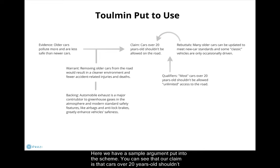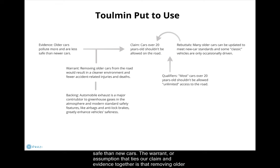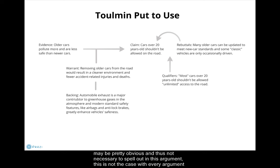Here we have a sample argument put into the scheme. You can see that our claim is that cars over 20 years old shouldn't be allowed on the road, and our evidence for why this is the case is because older cars pollute more and are less safe than new cars. The warrant, or assumption, that ties our claim and evidence together is that removing older cars would result in a cleaner environment and fewer accident-related injuries and deaths. While this warrant may be pretty obvious and thus not necessary to spell out in this argument, this is not the case for every other argument or warrant.